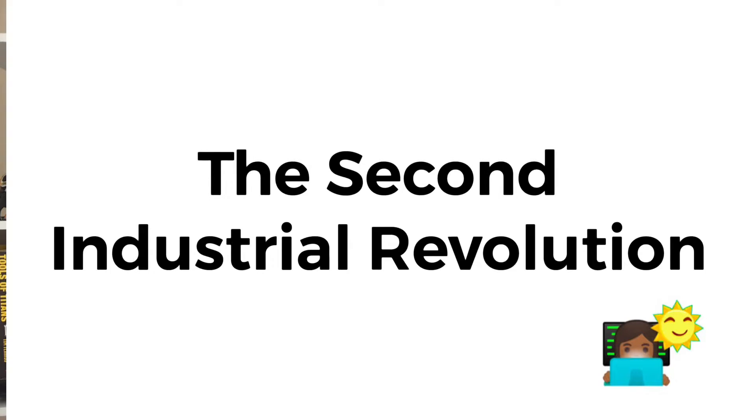The second industrial revolution, also known as the age of science and mass production, saw the first industrial revolution but at a scientifically larger scale. Scientific philosophy started being incorporated into factories and how factories did things. The second industrial revolution is also what sparked amazing new inventions such as the first telephone, the first television, and the first automobile.